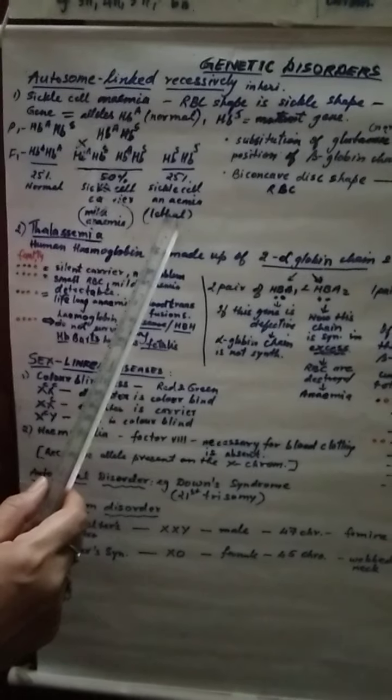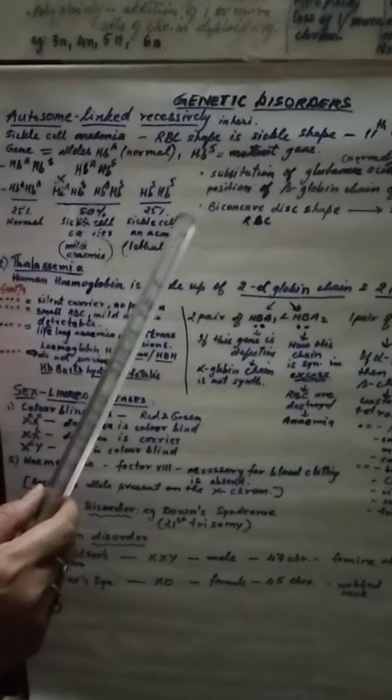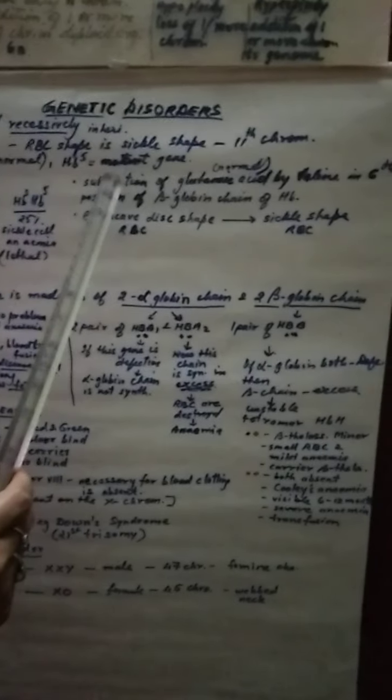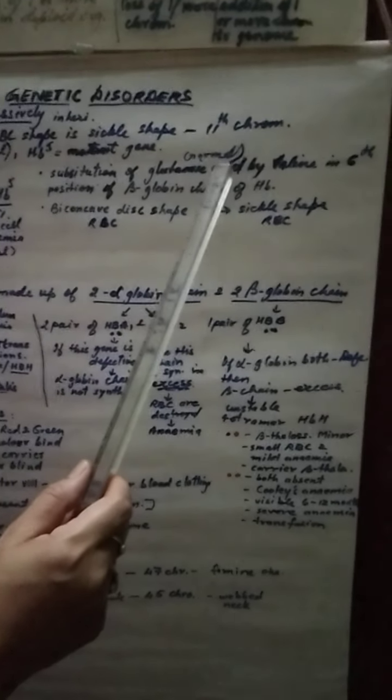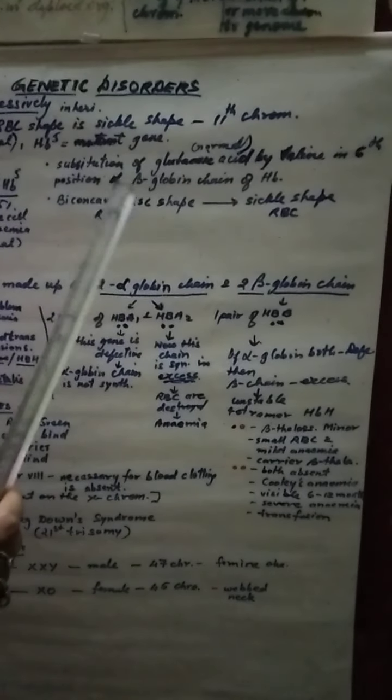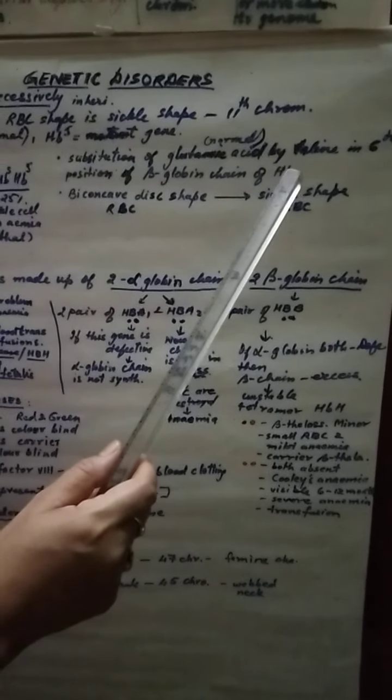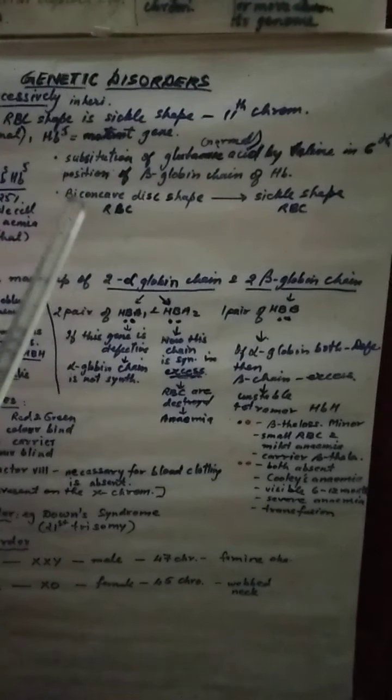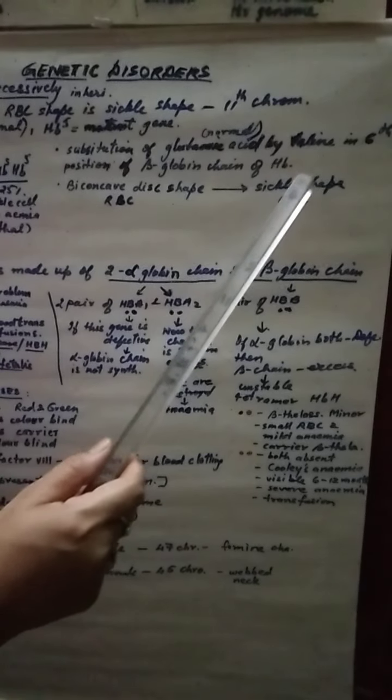And this child may die very soon. What has happened? This has happened because of the substitution of glutamic acid, this is an amino acid, by valine in the sixth position of the beta-globin chain of hemoglobin. Due to this biconcave disc shape of RBC is changed into sickle shape RBC. The next example is thalassemia.